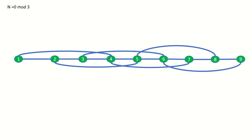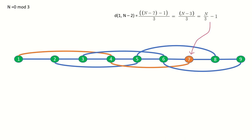How about a skip 3 graph of size 9? This time n equals 0 mod 3. Again treating the seventh vertex as the last vertex in a 1 mod 3 graph, we find that we can get to the third-to-last vertex in n minus 3 over 3, or n over 3 minus 1, steps.